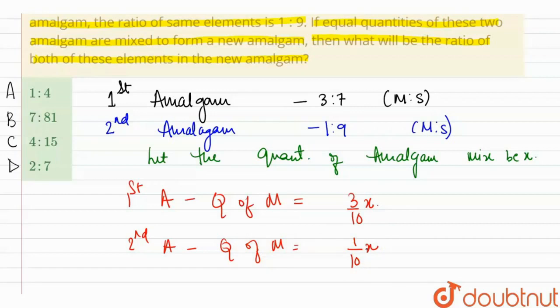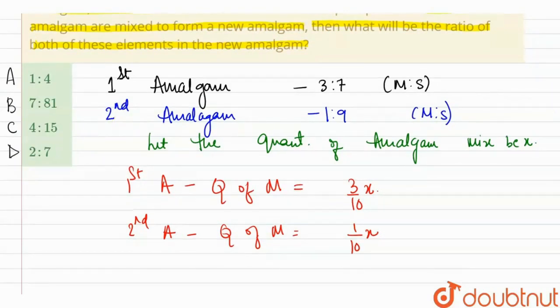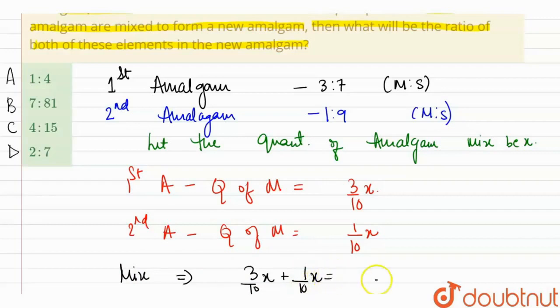Now, when we mix, this will basically add. When we mix, these two amalgams will combine. So we get 4/10x as the quantity. This will be quantity of mercury in the new mixture.